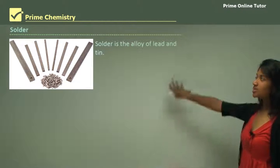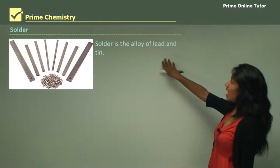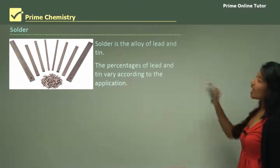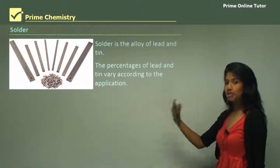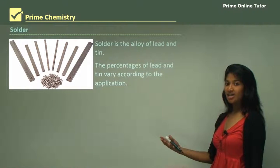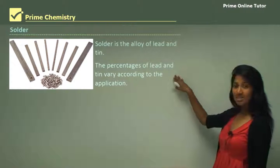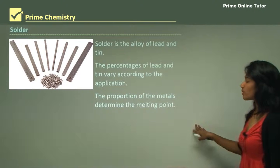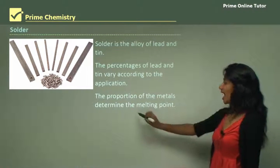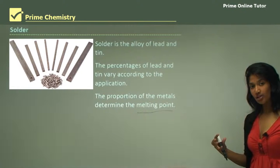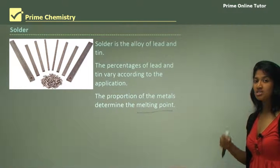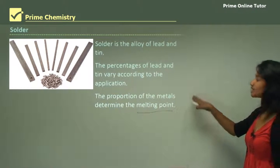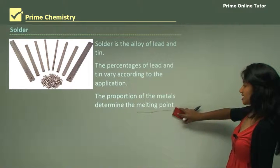Solder is also another alloy — it is an alloy of lead and tin, and the percentage would vary according to application. That means if some application requires more of the lead properties, it would have a higher lead content than tin content. The proportion of the metals determines the melting point. They do not have a fixed melting point; as you increase or decrease each of the metals inside the alloy, the melting point would vary in correspondence.